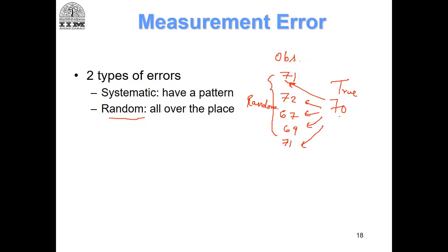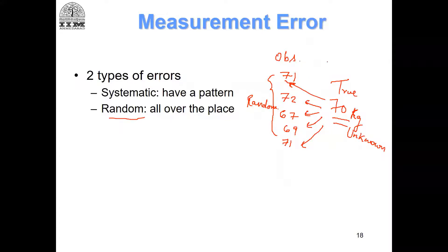First of all, we don't know the true score — it is unknown. We are trying to estimate the true score using the observed items. The true score is the actual construct; nobody has seen it. Nobody knows actual intelligence, but we can observe the readings on the five items.